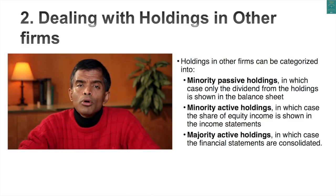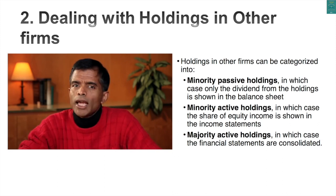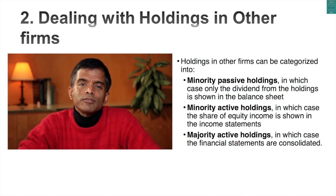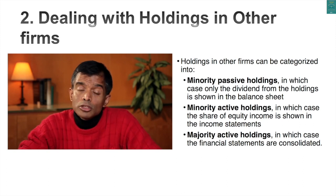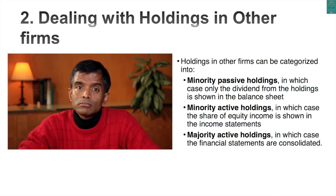In U.S. accounting there are three ways a cross-holding can be accounted for. If you own a small piece of a company — three percent, five percent — and take absolutely no role in how that company is run, the holding can be classified as a minority passive investment. With a minority passive investment, here's what you show in your income statement: the dividends you receive from those cross-holdings.